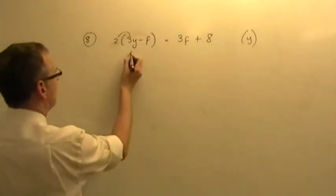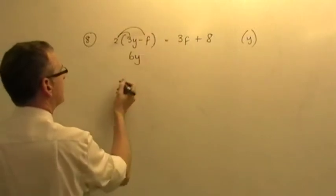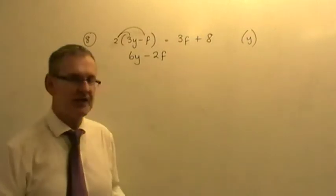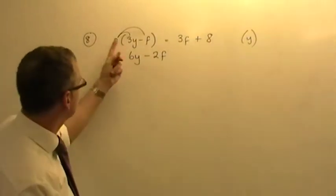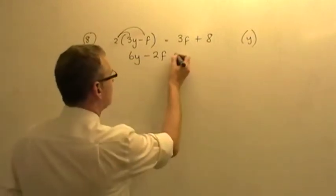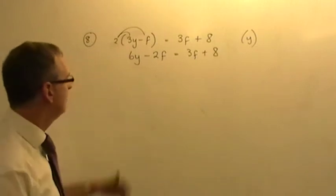So I'm going to expand it out. Now, you say 2 times 3Y is 6Y. Then you say 2 times the negative F is minus 2F. So you get 6Y minus 2F. That times that, that times that. And you get 6Y minus 2F. The other side we leave alone for the moment.